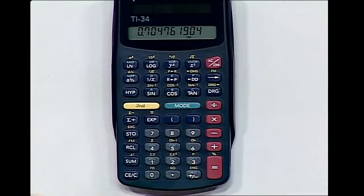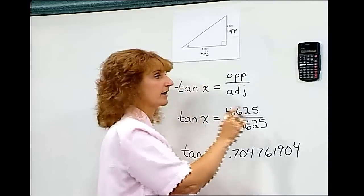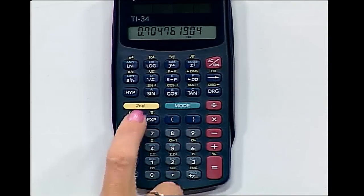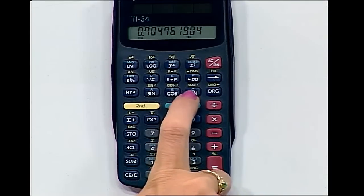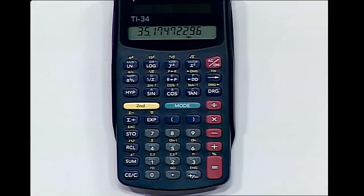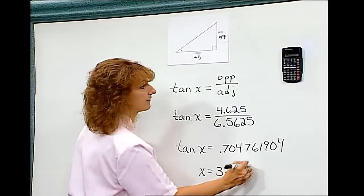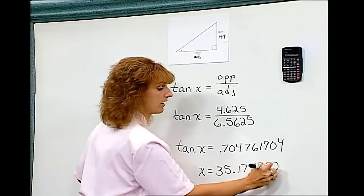That tangent above there with the little negative 1 in the upper right hand corner is read as arc tangent. And we're going to hit second for the arc tangent and get x equals 35.17472296.